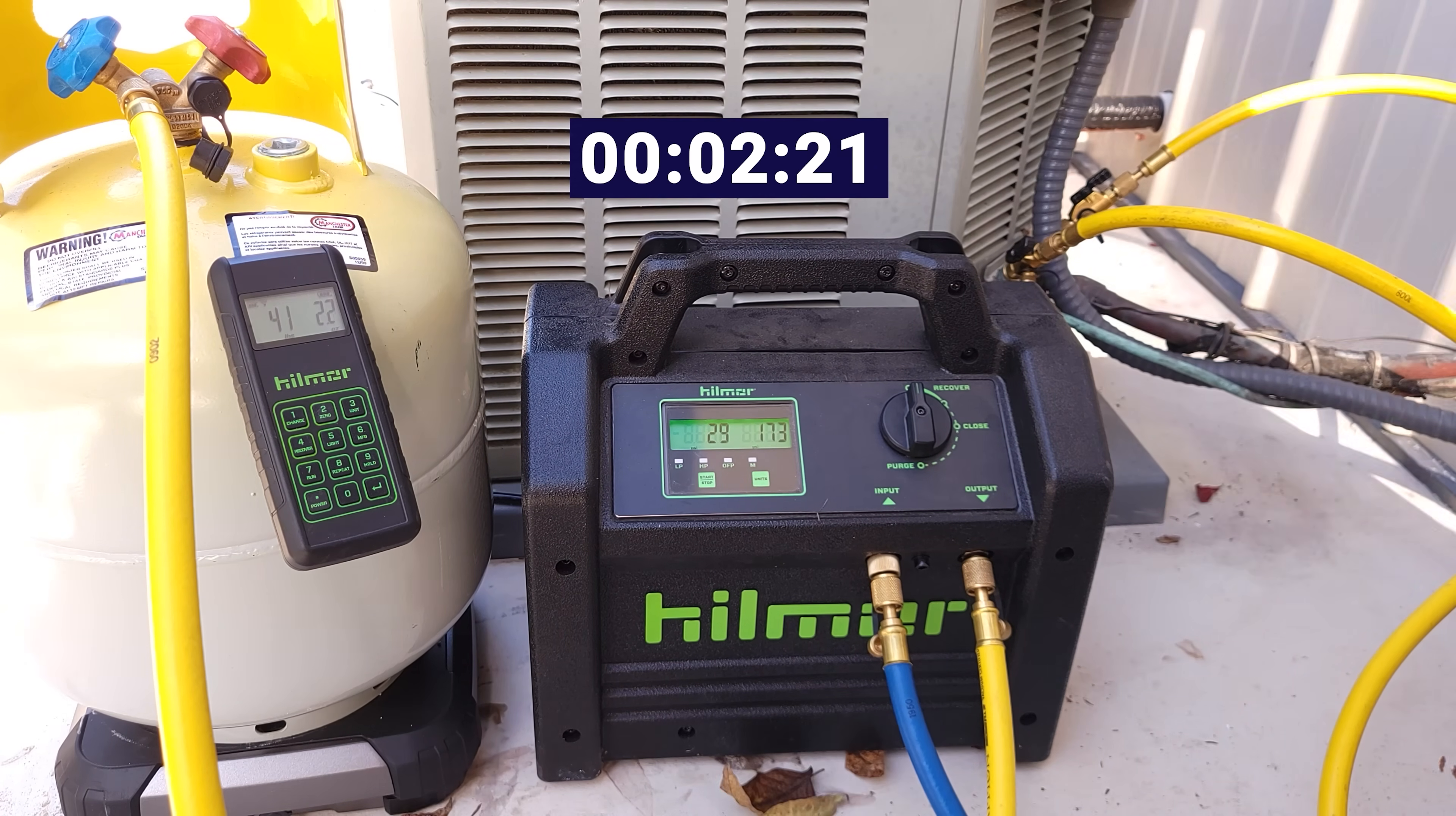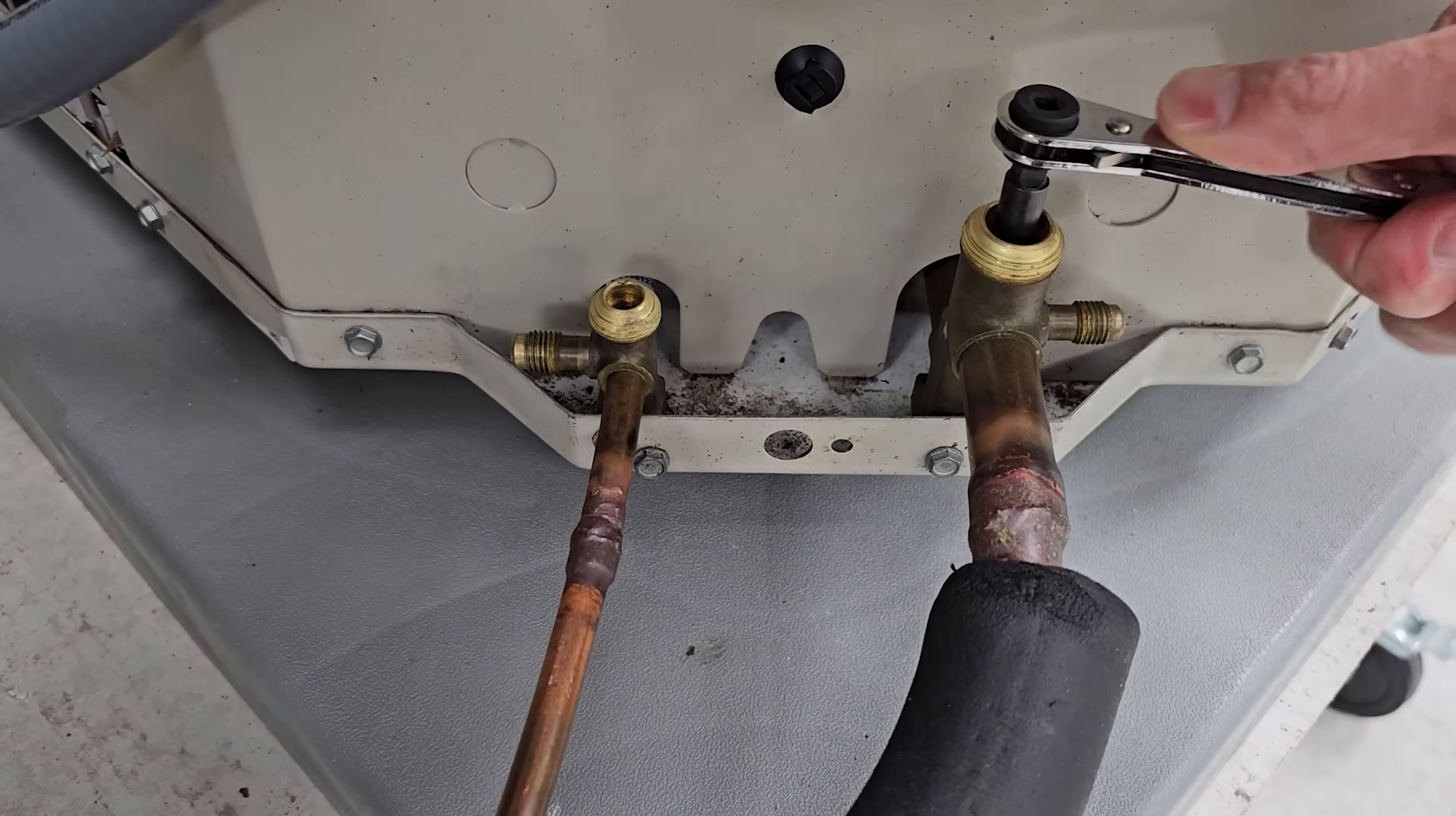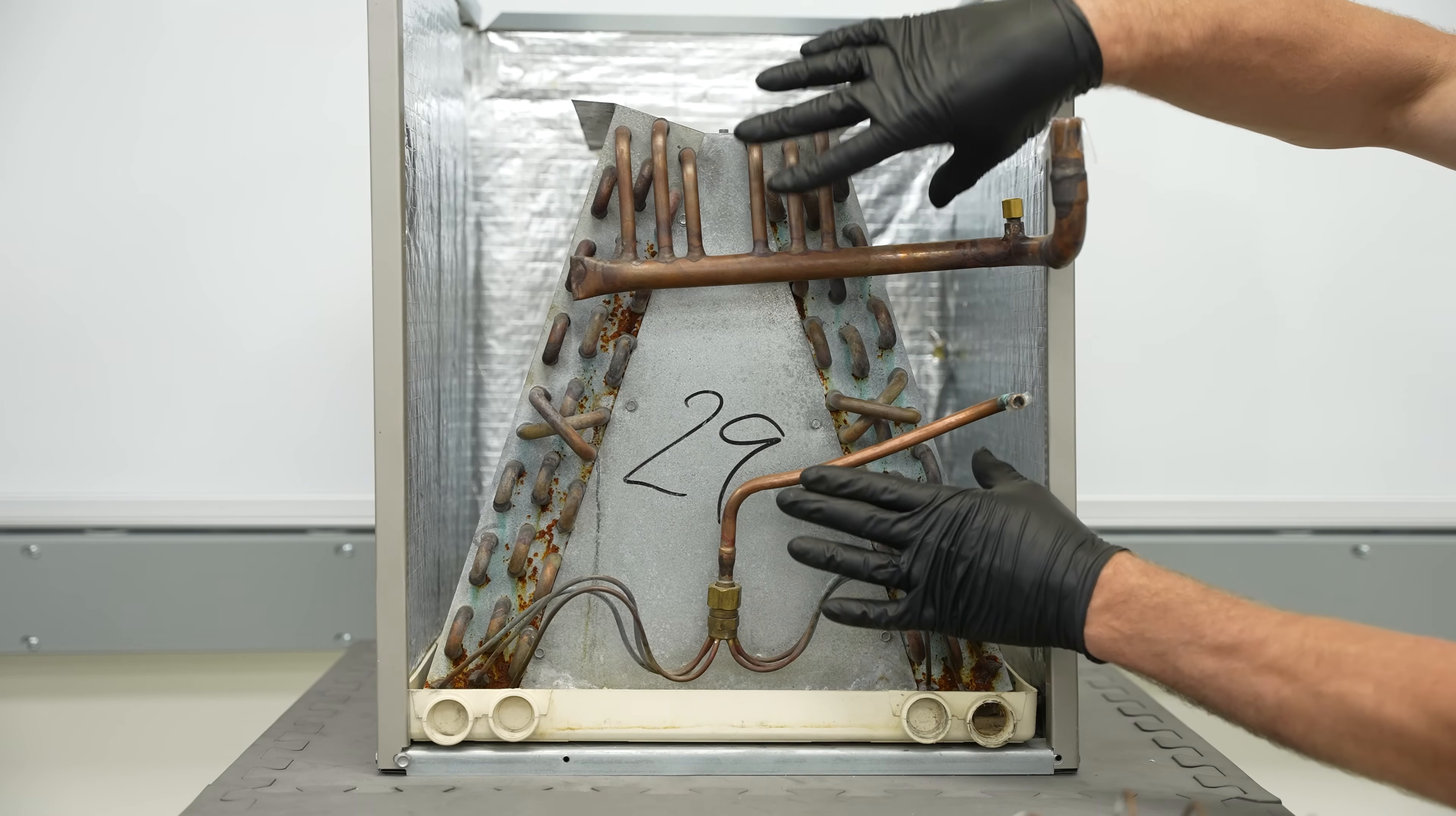Or what you can do is, with the power off, shut the liquid line and the vapor line service valves and just recover the refrigerant in the line set connecting to this coil and the refrigerant in the coil itself.